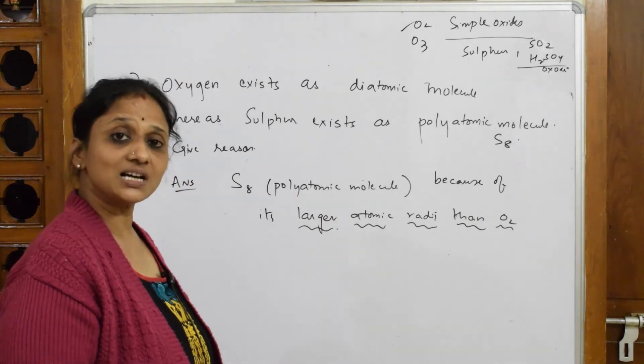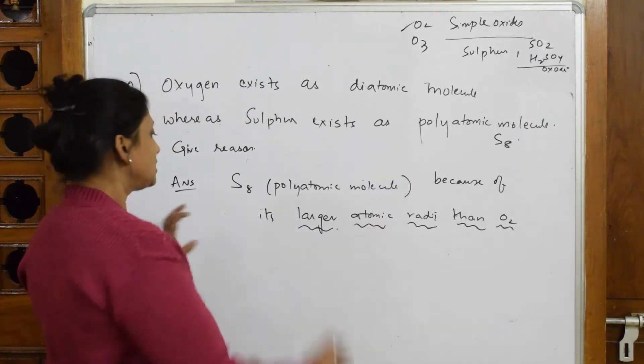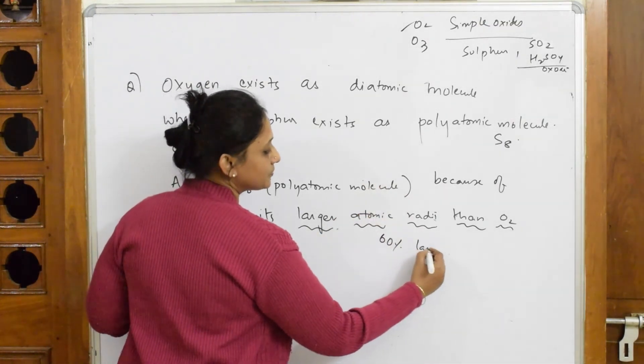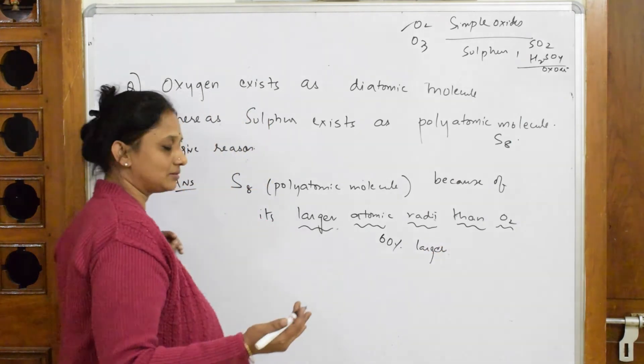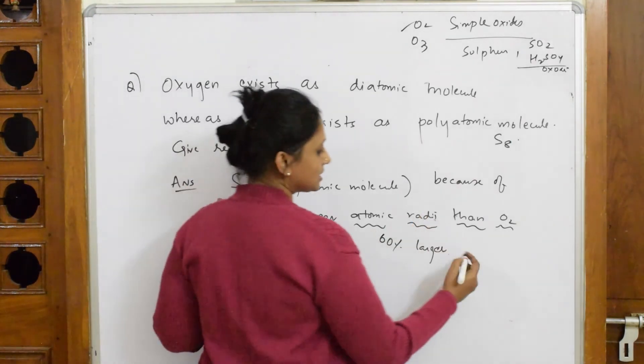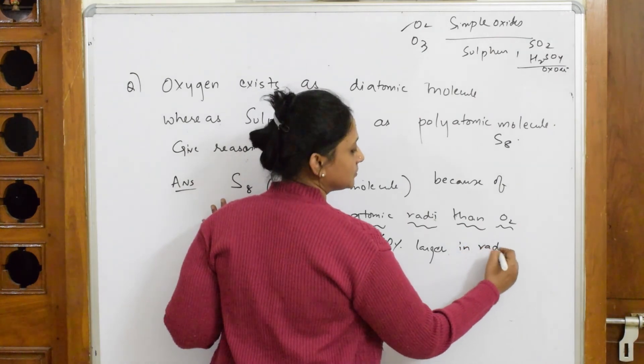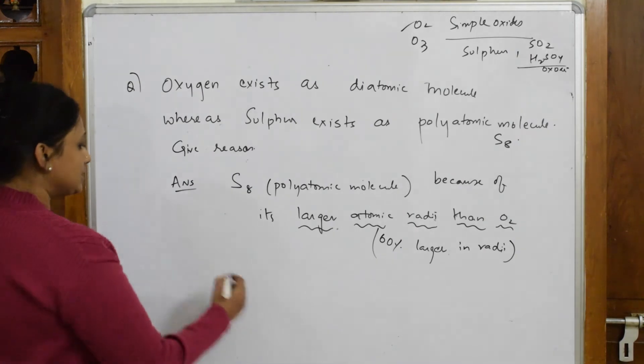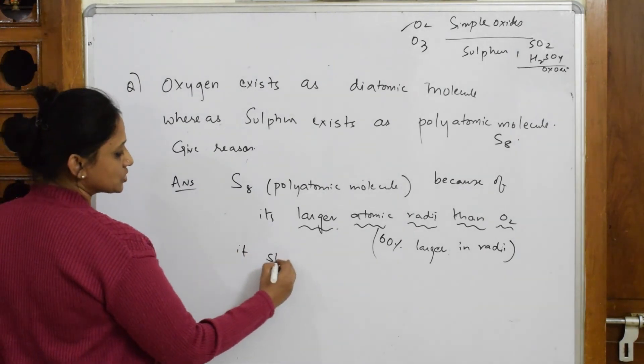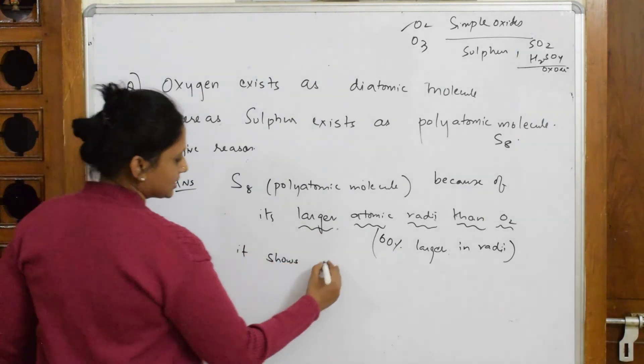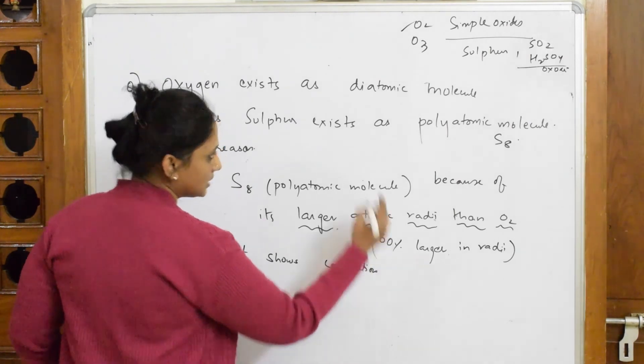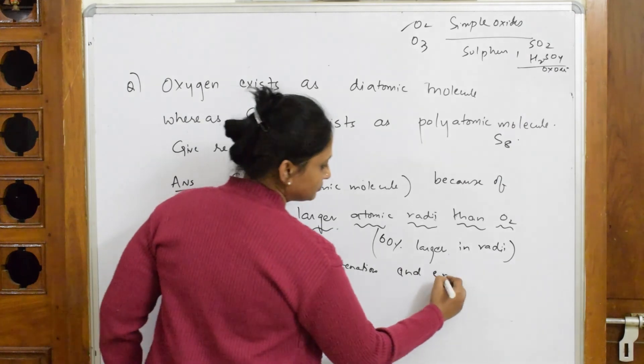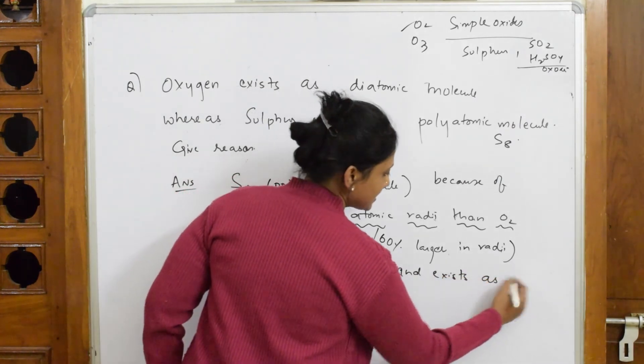If you still want to write, how much larger is sulfur than oxygen? Larger atomic radii, that means it is 60% larger in radii when I compare the radii. This is extra information for you all. So because of this larger radii, it shows the catenation we said, and exists as S8 molecule.